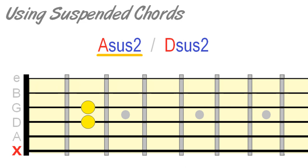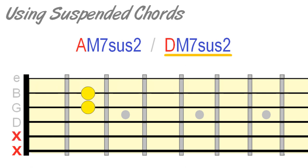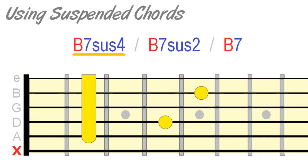For example, in A major. In many songs, you'll hear interchange between sus2 and sus4 over both major and minor chords. Because the second, third and fourth intervals are in close proximity, any movement between them has a natural voice leading quality.